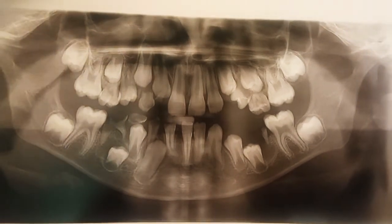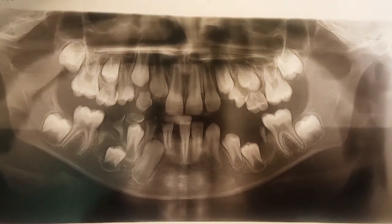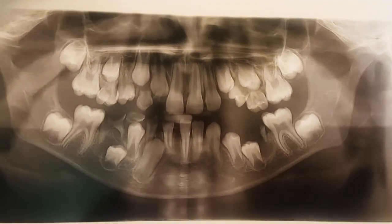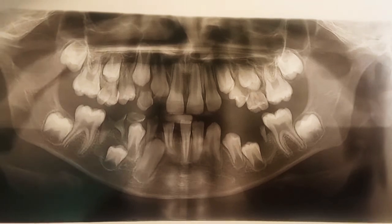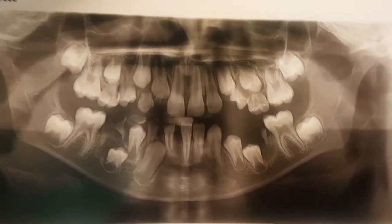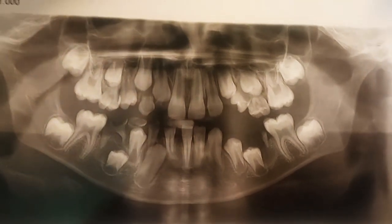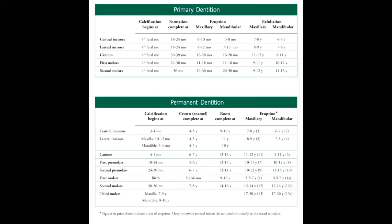This video is divided into components. In the first component I will show you the eruption and shedding dates of both deciduous and permanent teeth. In the second component I will mark out the shedding of the deciduous teeth, and in the last one the position of permanent teeth. Moving to the first component — the discussion about the eruption and exfoliation dates.